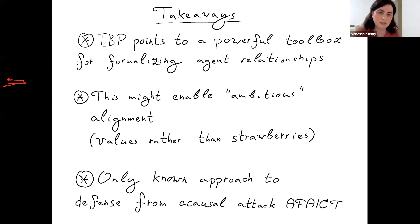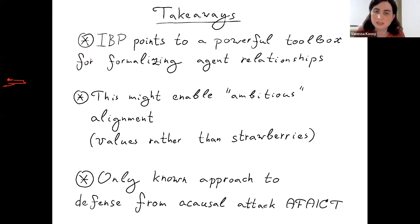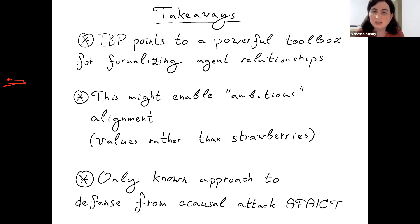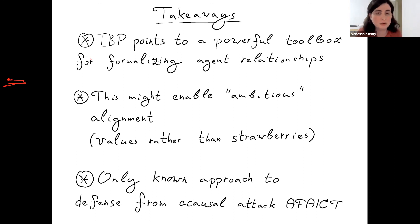The second takeaway is that this whole scheme might enable what I call 'ambitious alignment' — actually learning the full values of the user and optimizing for them, rather than just putting a strawberry on a plate. Miri's plan says CV is too hard and proposes just building an AI that places a strawberry on a plate, but that's also hard. I want to do the full thing, and I think the full thing is actually easier, because here I don't need to deal with the corrigibility problem — which is possibly completely intractable — but instead deal with other problems that look more tractable at this stage.